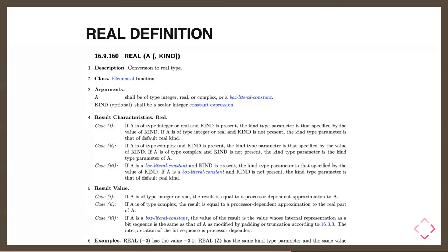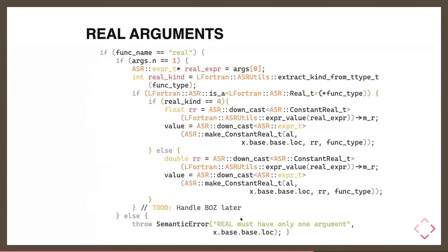I'll take the quick example of the 'real' intrinsic, which is a very nice and simple intrinsic. For clarity, I'll skip the bars and complex and only look at real and integer. The standard says: if it's type integer and kind is present, then... and this is the exact representation we do in the code. We check the function name — is it 'real'? Does it have one argument? Then we do all those nice checks. With the ASR on one hand and the standard on the other, you're in a perfect place to go through the entire standard and learn the whole language.